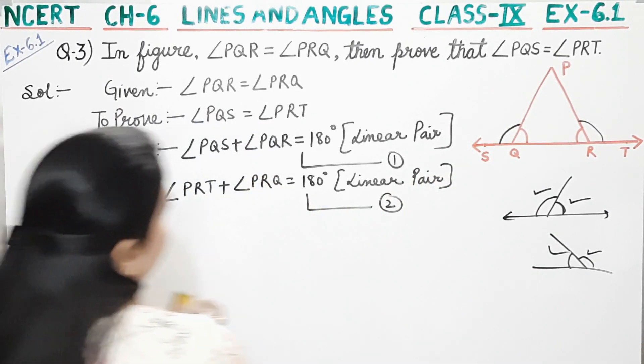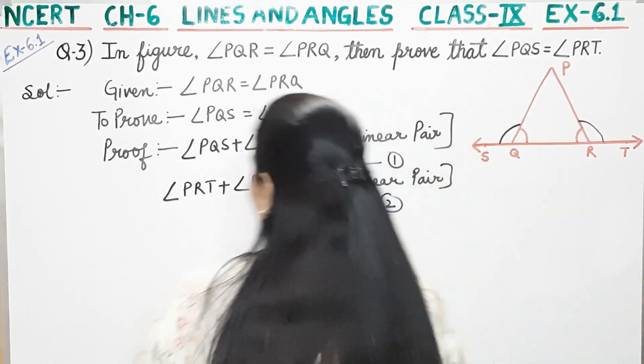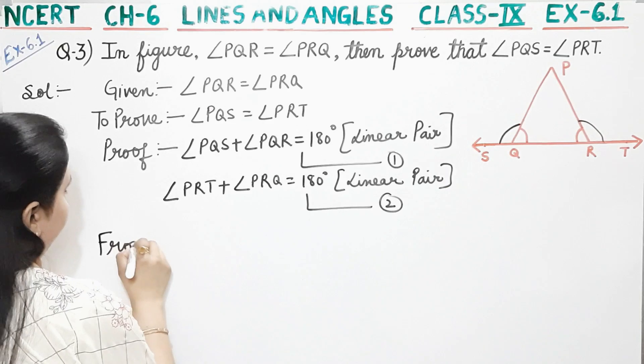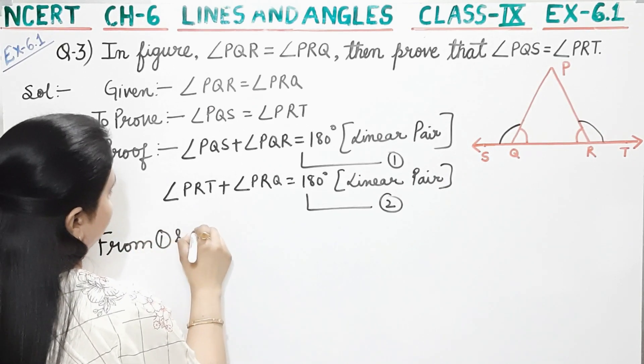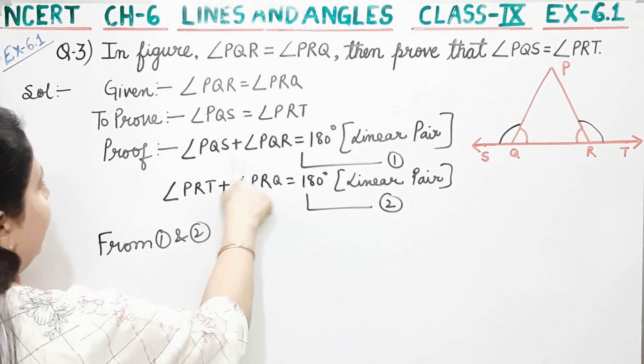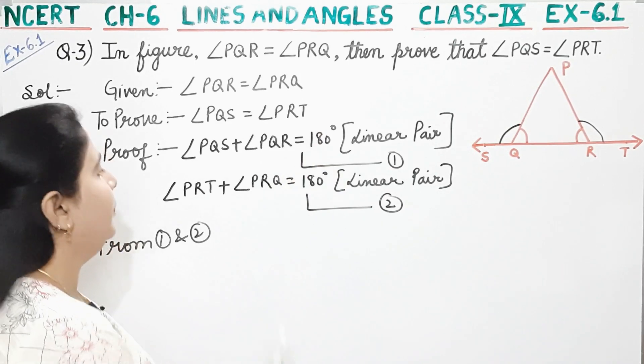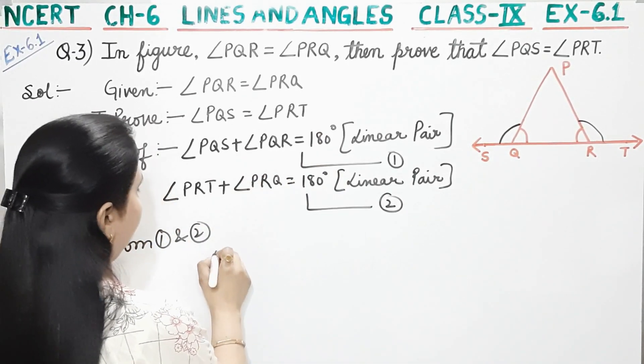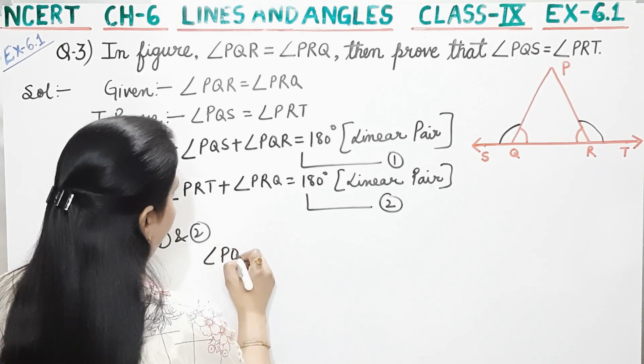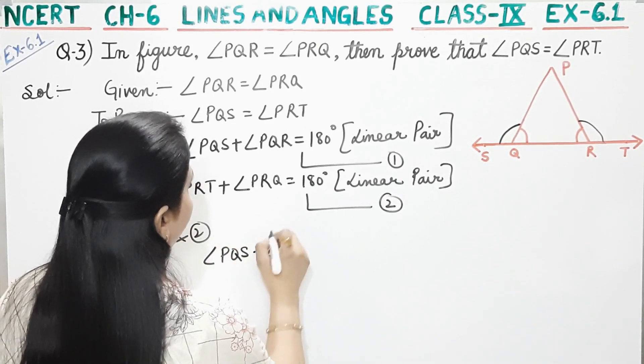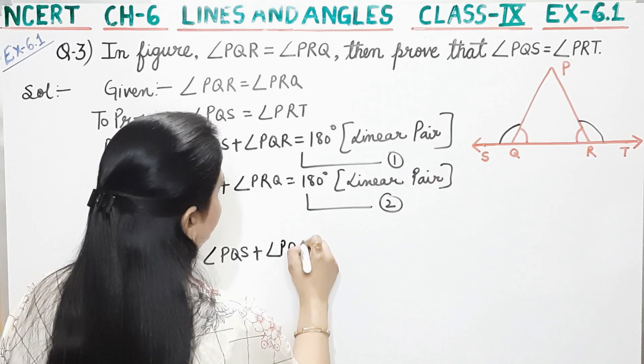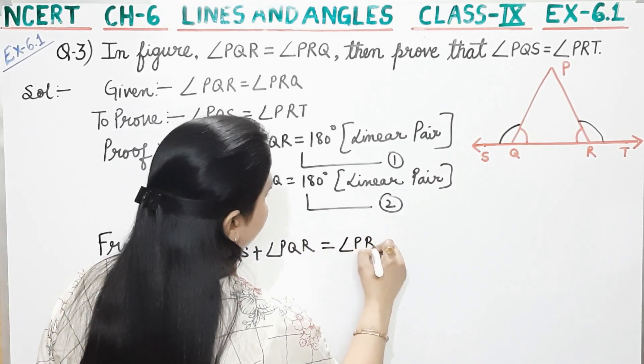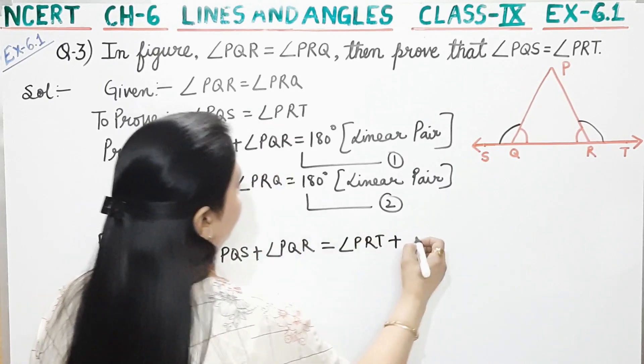So, from equation 1 and 2, we can say from 1 and 2, see, this is also equal to 180 degrees, this is also equal to 180 degrees, so both are equal. So, we can write angle PQS plus angle PQR is equal to angle PRT plus angle PRQ.